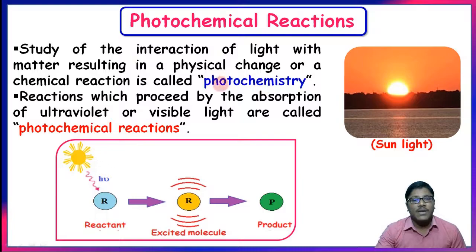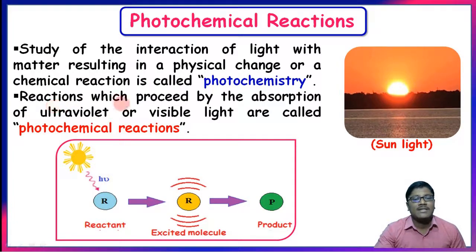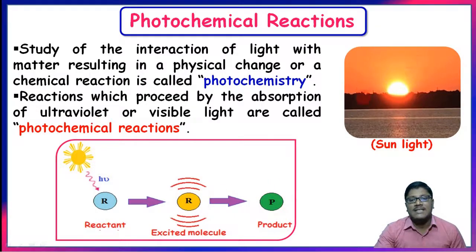What is photochemistry? The branch of chemistry which deals with the study of interaction of light with matter resulting in a physical change or chemical change is known as photochemistry. The reaction which proceeds by absorption of ultraviolet or visible light is known as a photochemical reaction. The reactant molecule absorbs light and gets excited; the excited molecule may be converted into product. Sunlight is the major source for ultraviolet and visible light.